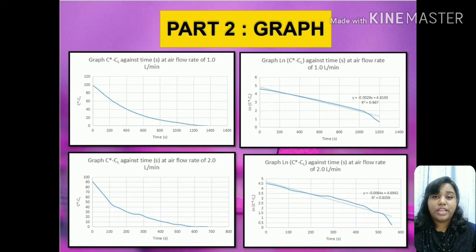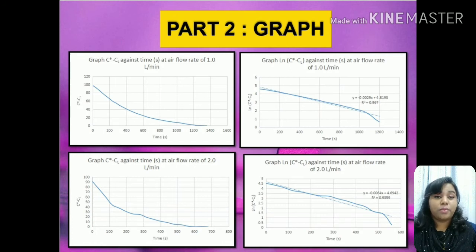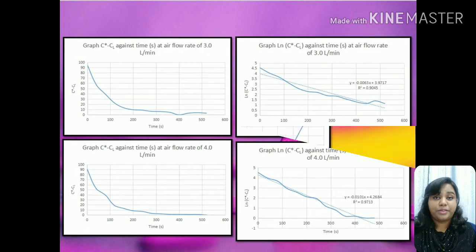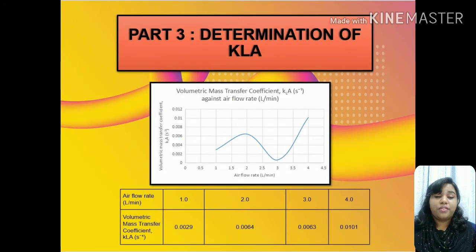Next would be the graphs. We can see the graphs of driving force and next to it the log driving force. The main part to be analyzed is the slope and the equation obtained from each log driving force graph, as the log driving force is more vital for identifying the KLA value in this experiment. This is followed by the log driving force values for flow rates of 3 and 4 liters per minute. In the third part, from all the information gathered on the log driving force, we are able to determine the value of KLA.